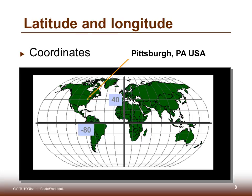Longitude and latitude coordinates can be read in this way. The location for Pittsburgh, Pennsylvania would be 40 degrees north — that's a plus 40 degrees — and minus 80 degrees, which is equivalent to 80 degrees west. Positive values are north of the equator, negative values are south of the equator. Positive values are east of the prime meridian, and negative values are west of the prime meridian.